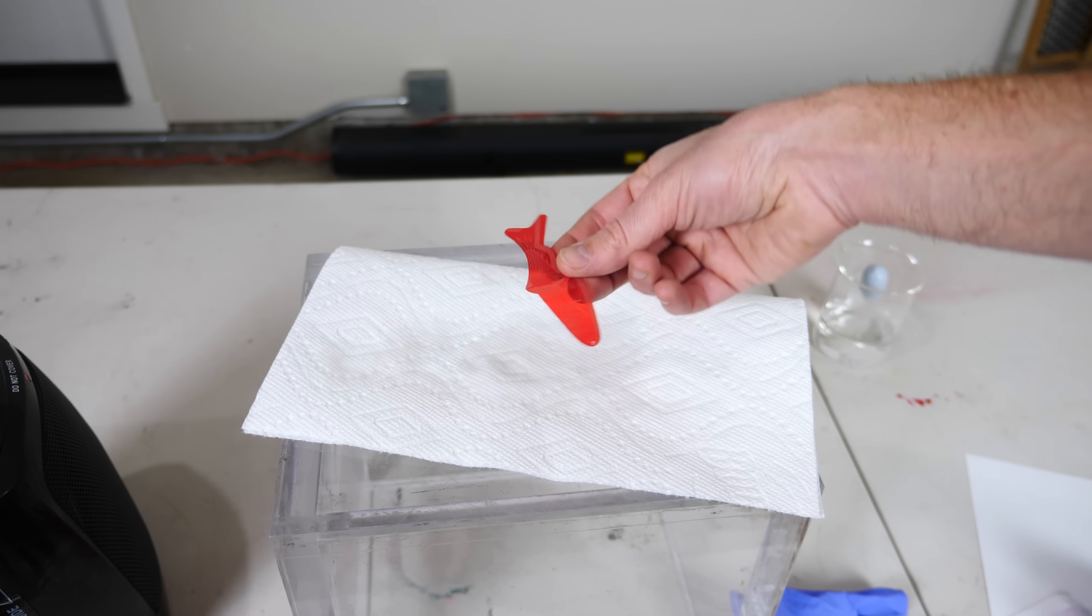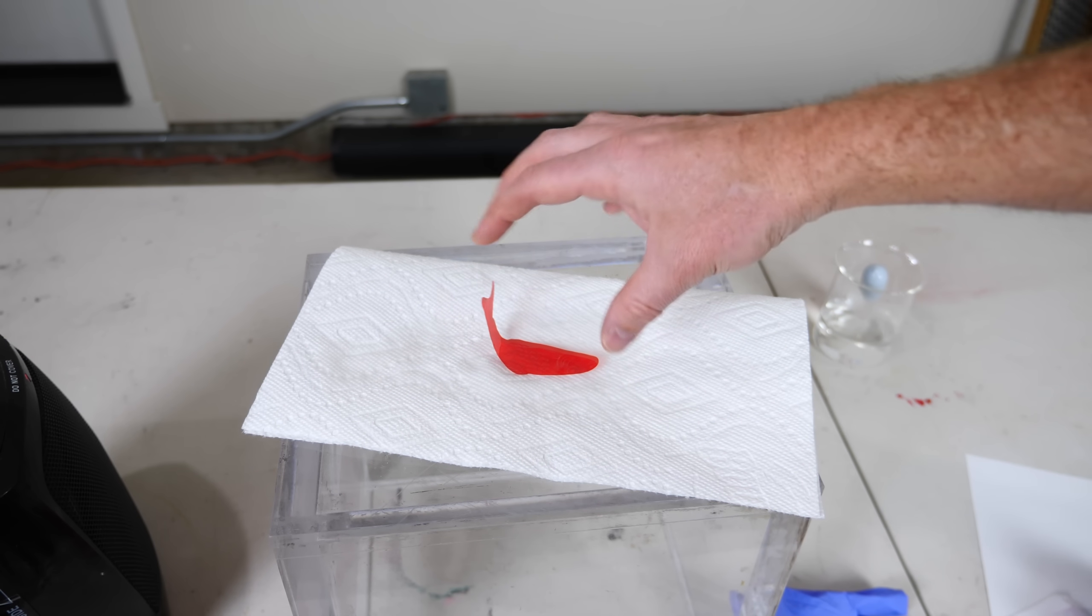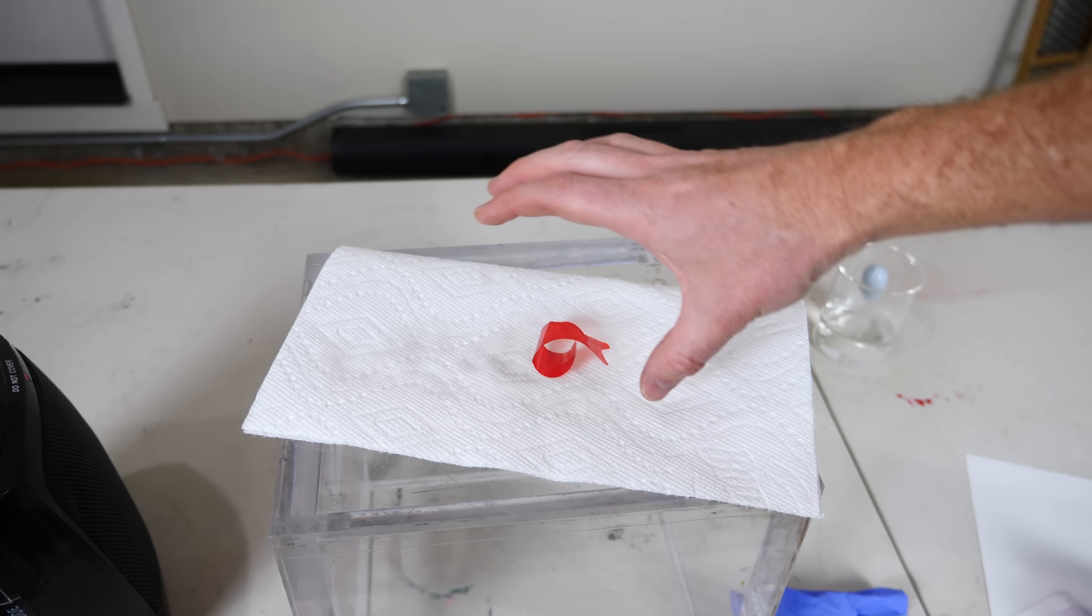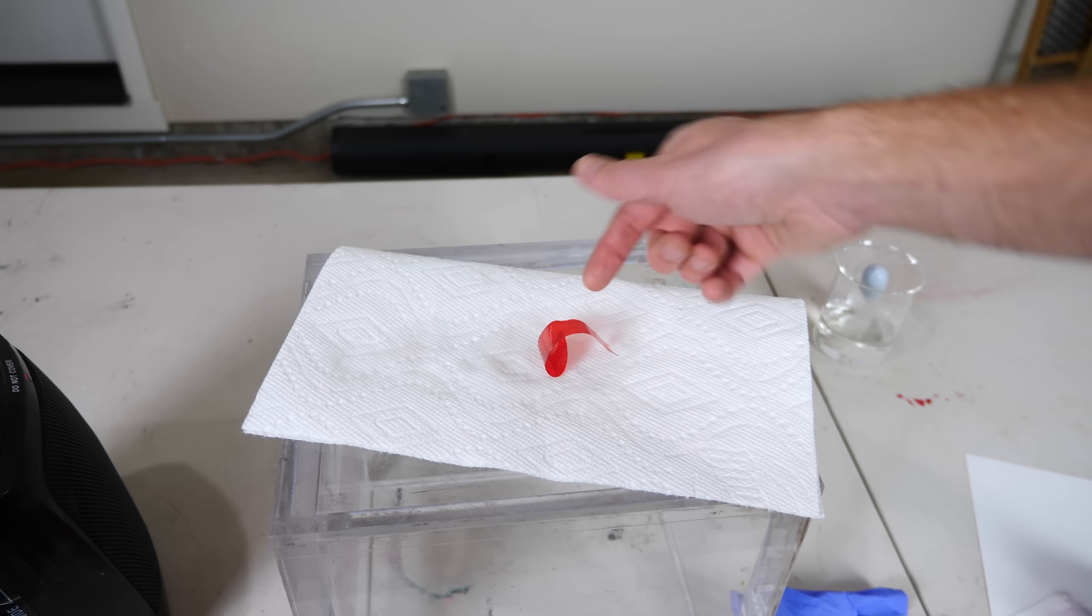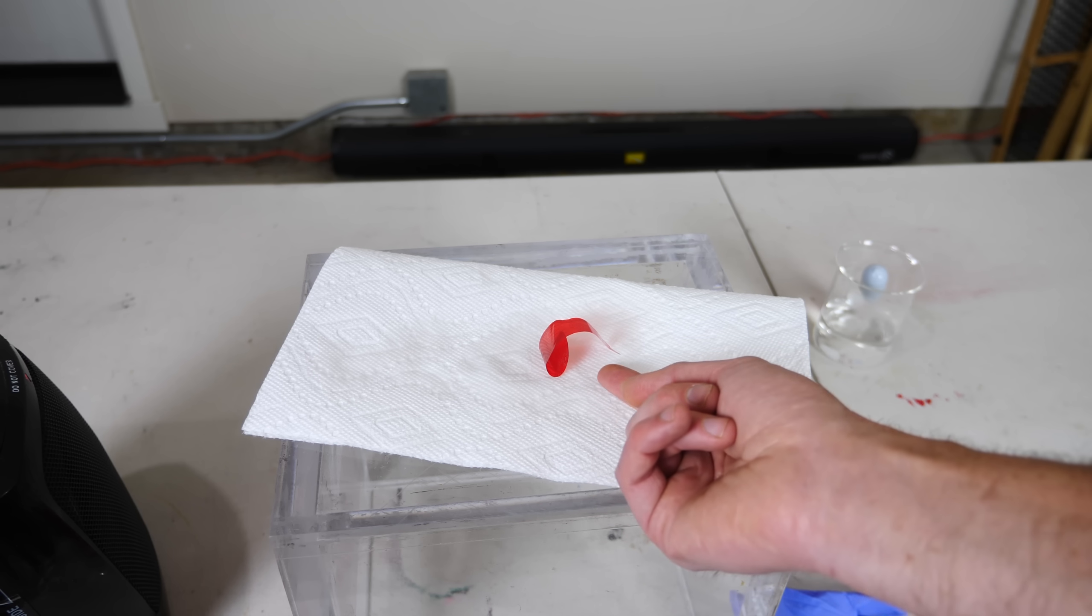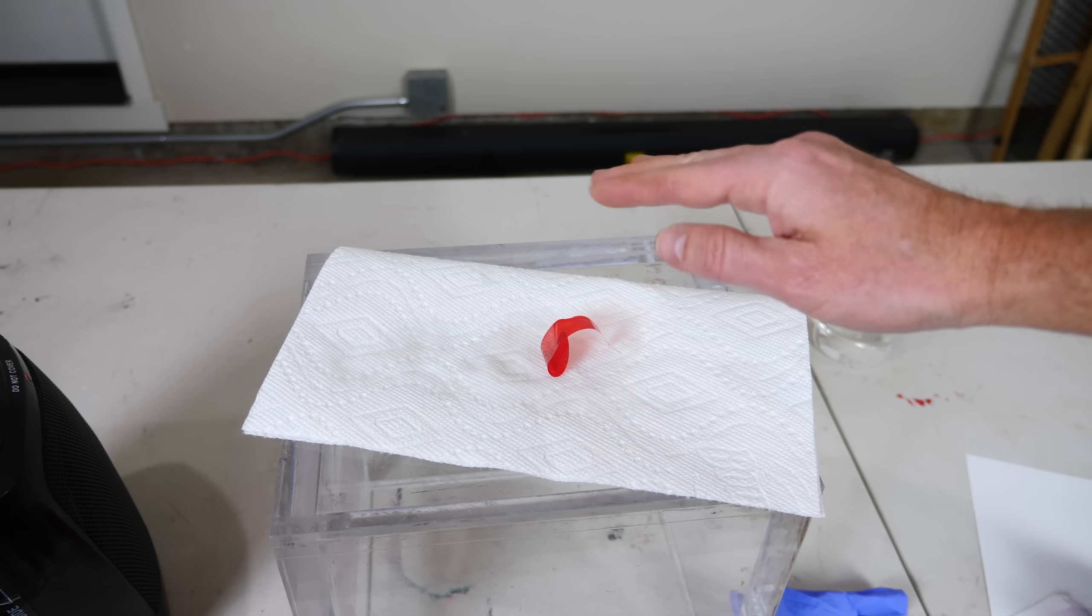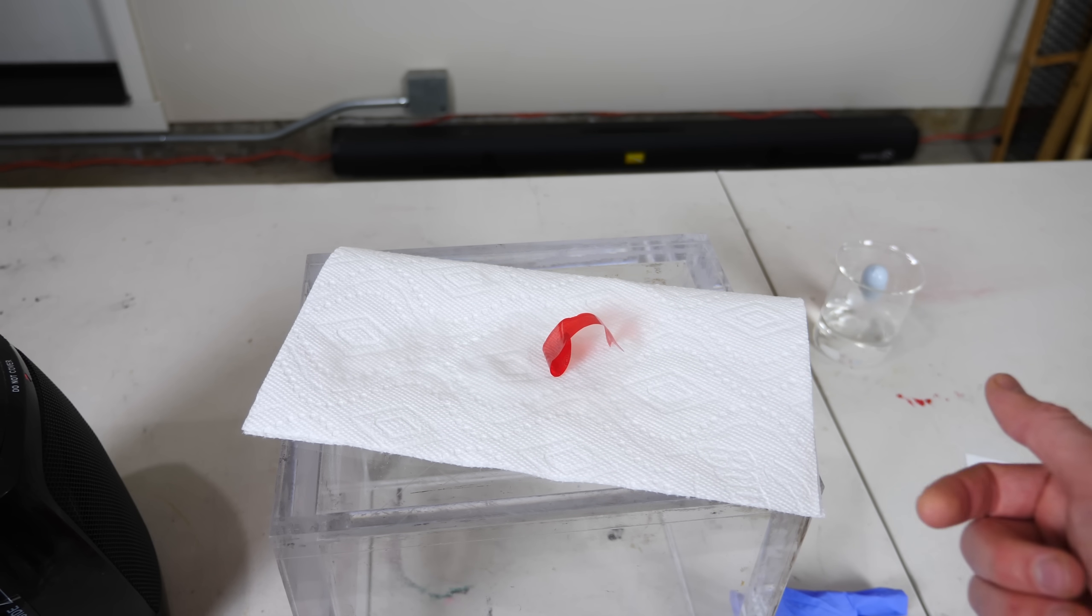So the side that's near the water gets thicker, and as it gets thicker it makes it expand on the bottom and that curls it. But then as it curls up and changes direction it can flip over, now this side is towards the bottom and so this side will start to curl the other direction, so it kind of wriggles around on your hand.